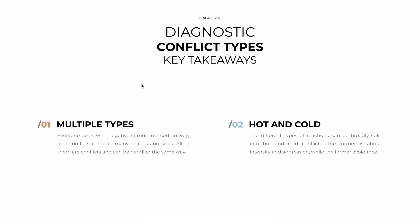What are our key takeaways here? The first is that there are multiple types of conflict — everyone deals with things in a different way, so conflict comes in many shapes and sizes. But all of these are conflicts, and all of them must be handled, usually in the same way. The different types of conflicts can be broadly grouped into hot and cold ones. While hot conflicts are about aggressiveness and intensity, cold conflicts are about avoidance and withdrawing. Although the tools we're going to use are mostly the same for both types, for hot conflicts the person is aggressive and needs to calm down, and in cold conflicts the person is withdrawing and needs to connect with you more.